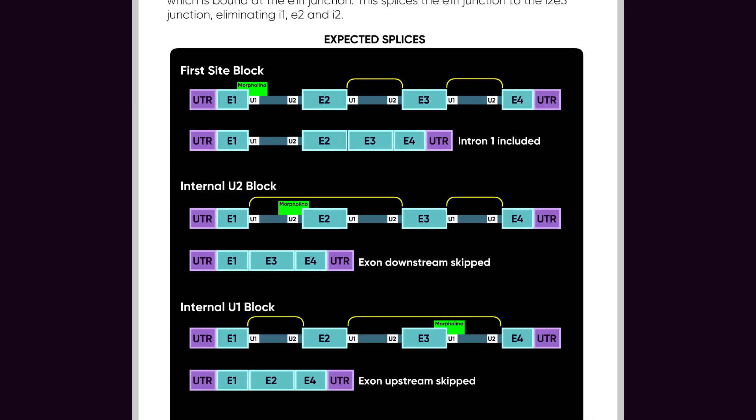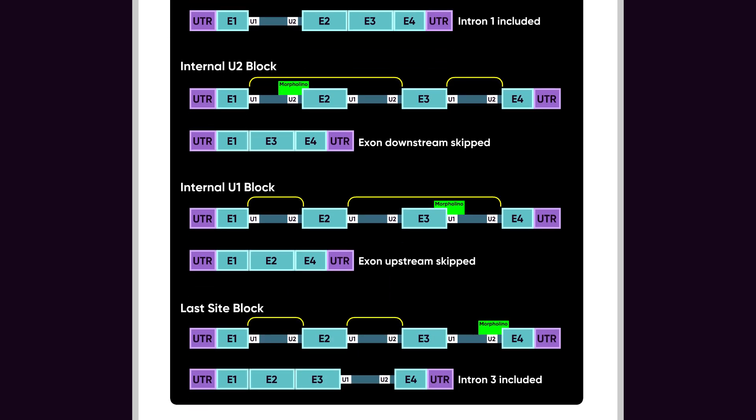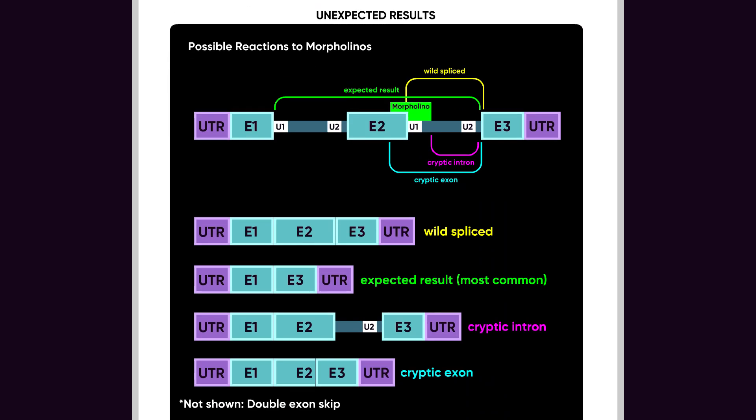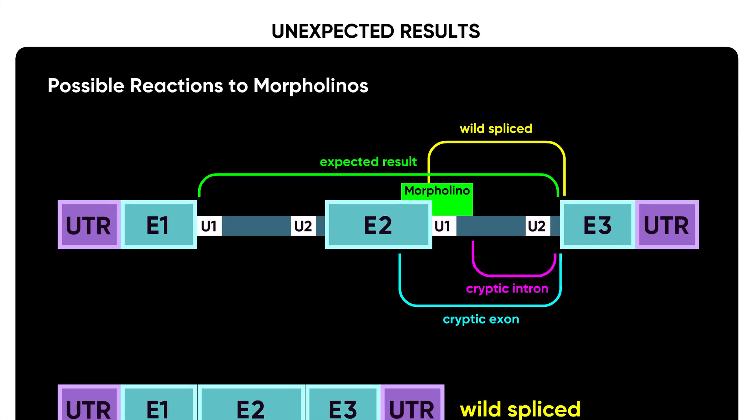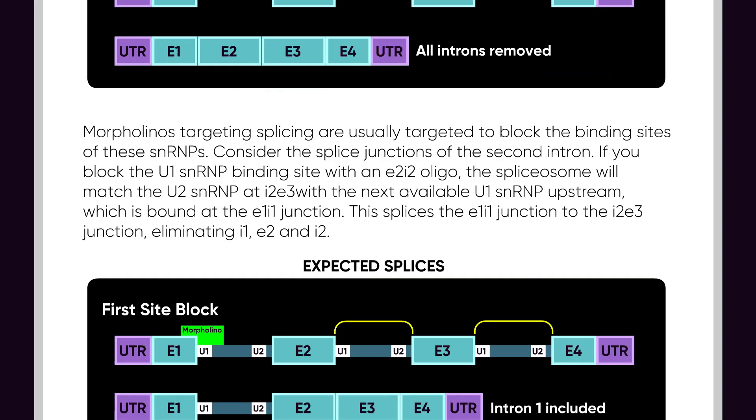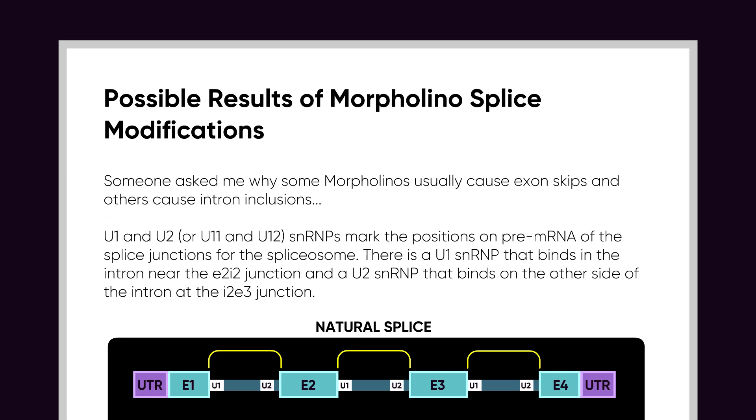Results shown here are the typical results of a splice modification experiment, but sometimes unexpected splice outcomes happen. To interpret the outcome of a splice modifying experiment, it's important to be aware of these unusual outcomes. For more, see the supporting document, Possible results of morpholino splice modifications.